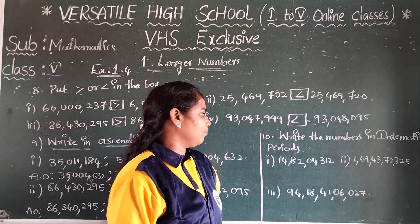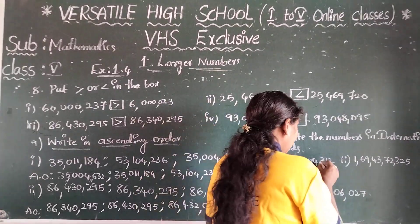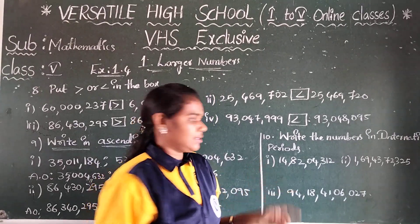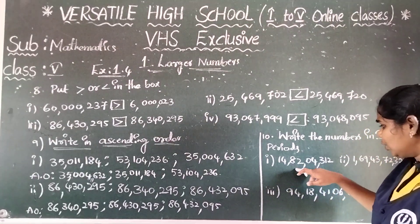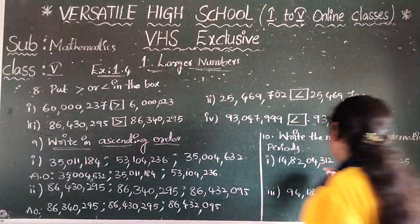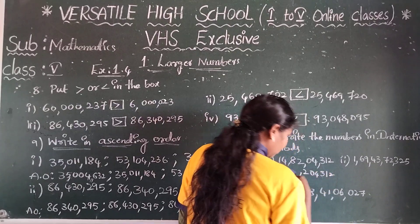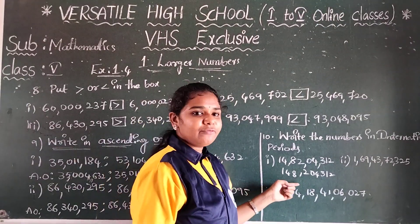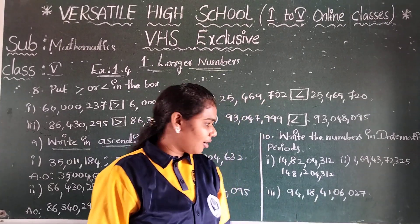Next, the tenth question: write all numbers in the international period. Indian place values are given and you write them in international places. The first number: 14 crores, 4312 — in international period this is 148 millions, 204,312.